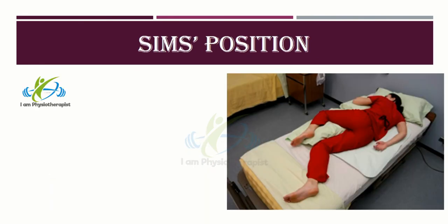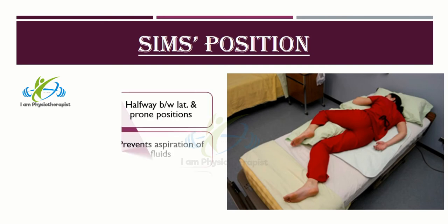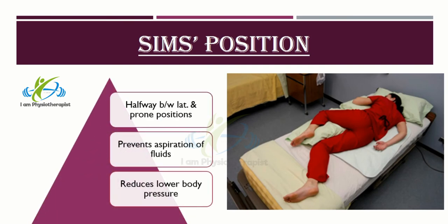Sims' position or semi-prone position is when the patient assumes a posture halfway between the lateral and the prone positions. The lower arm is positioned behind the client, and the upper arm is flexed at the shoulder and the elbow. The upper leg is more acutely flexed at both the hip and the knee than the lower one. This position prevents aspiration of fluids and may be used for unconscious clients because it facilitates drainage from the mouth. It is also used for paralyzed clients because it reduces pressure over the sacrum and greater trochanter of the hip.